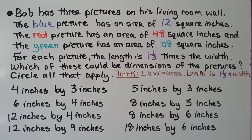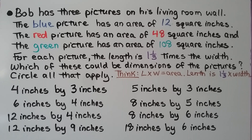Bob has three pictures on his living room wall. The blue picture has an area of twelve square inches, the red picture has an area of forty-eight square inches, and the green picture has an area of one-hundred-eight square inches. For each picture, the length is one-and-one-third times the width. Which of these could be dimensions of the picture? Circle all that apply.